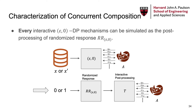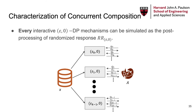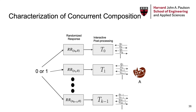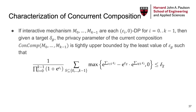That is, for every interactive mechanism that is epsilon-zero differentially private and every neighboring dataset x and x', we can construct an interactive post-processing mechanism T so that the view of the adversary interacting with M has the exact same distribution as the view of the adversary interacting with T, given a random bit from epsilon-zero randomized response. The proof idea is by setting the two distributions to be the same and then deriving T. It is mainly technical, so I do not go into too much detail. Therefore, to analyze the privacy loss of composing arbitrary pure interactive DP algorithms, we can instead analyze the composition of randomized response with the same privacy parameters, since DP is preserved under any post-processing.